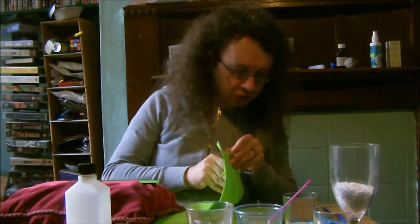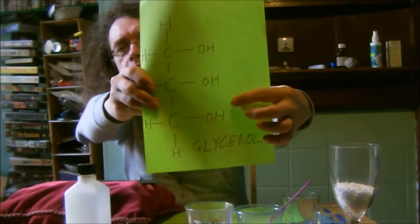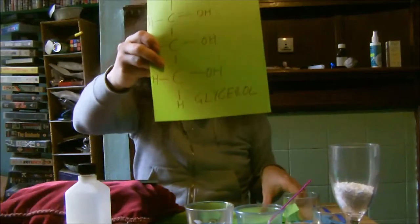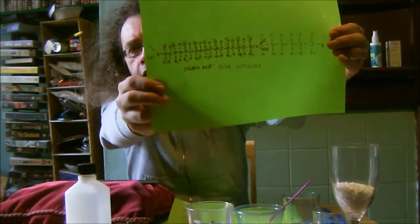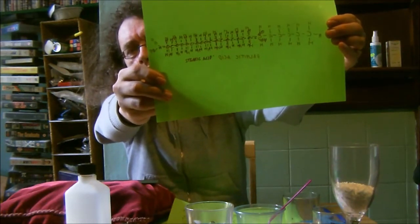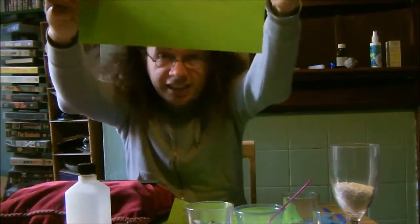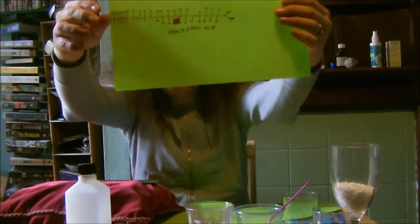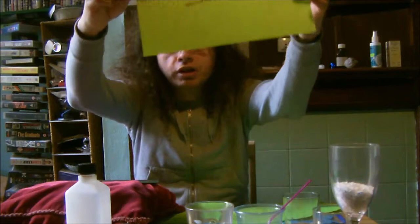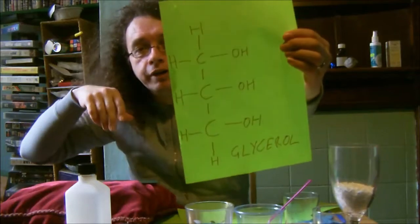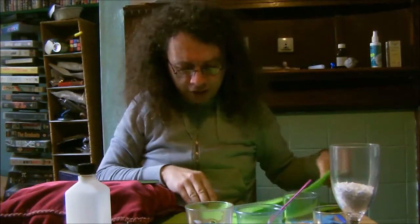In triglycerides, the hydrogens on the glycerol are replaced as acids slot in, losing their own hydrogens. Examples of fatty acids include stearic acid — a long chain of carbons and hydrogens with a carboxyl group (COOH) on the end. Another is palmitic acid, found in palm oil hence the name. And arachidonic acid, which as the name suggests is from peanuts. Glycerol loses its hydrogens and gets those fatty acid chains slotted in, giving you a triglyceride.